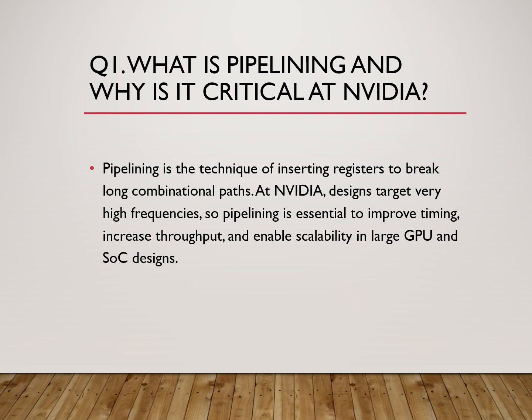By pipelining, we reduce the critical path delay, increase achievable clock frequency, improve throughput, and enable large-scale designs to meet timing. Pipelining is not optional at NVIDIA — it's mandatory for performance-driven designs. If you say pipelining is a key enabler for high frequency and scalable NVIDIA architecture, it creates a very strong impression.